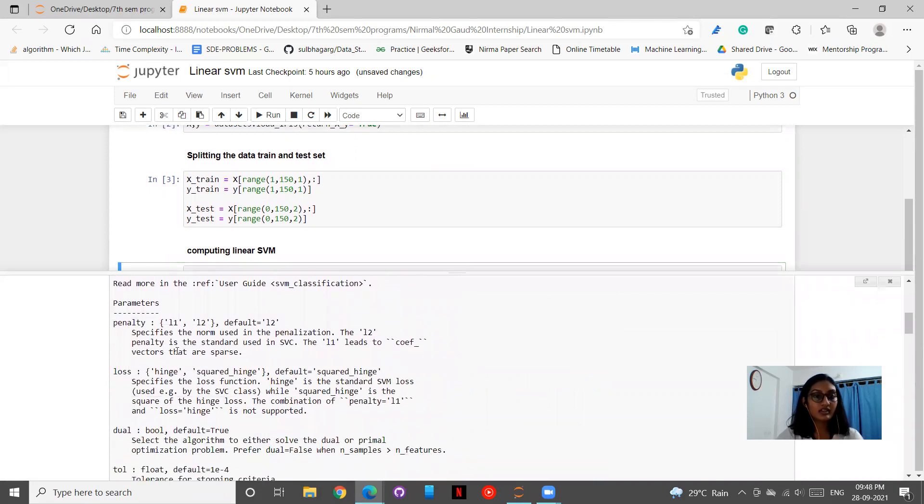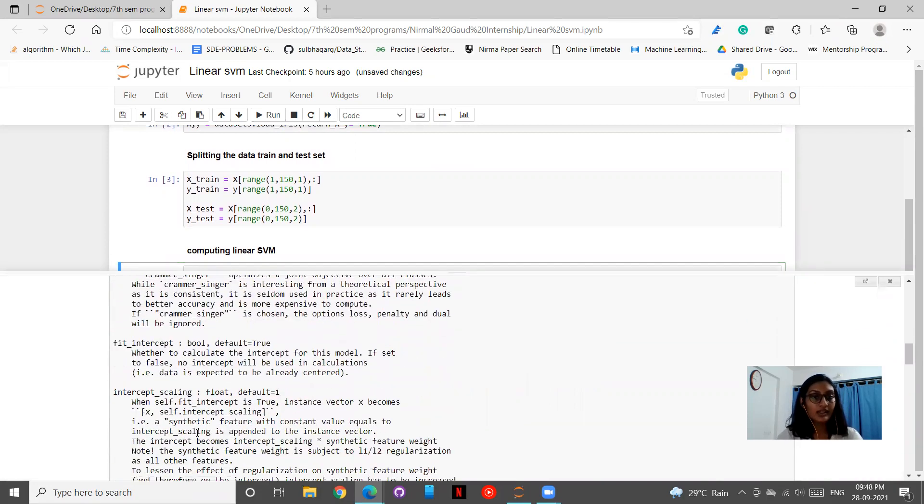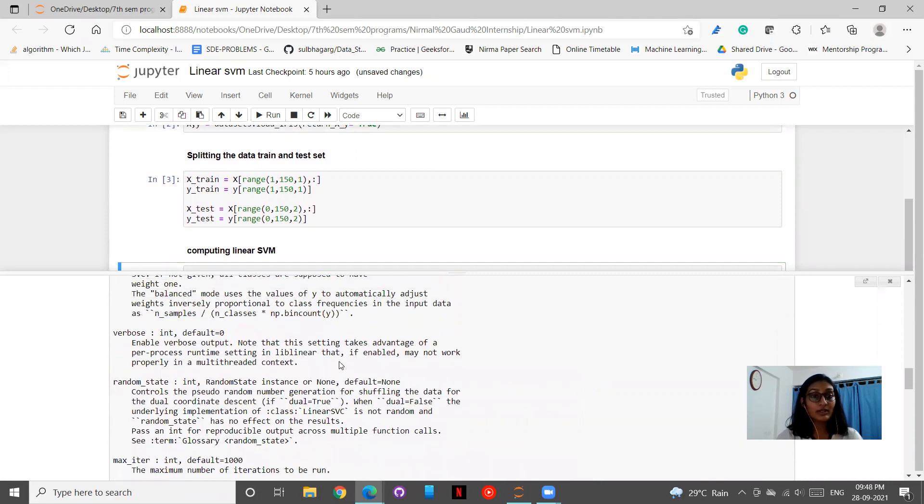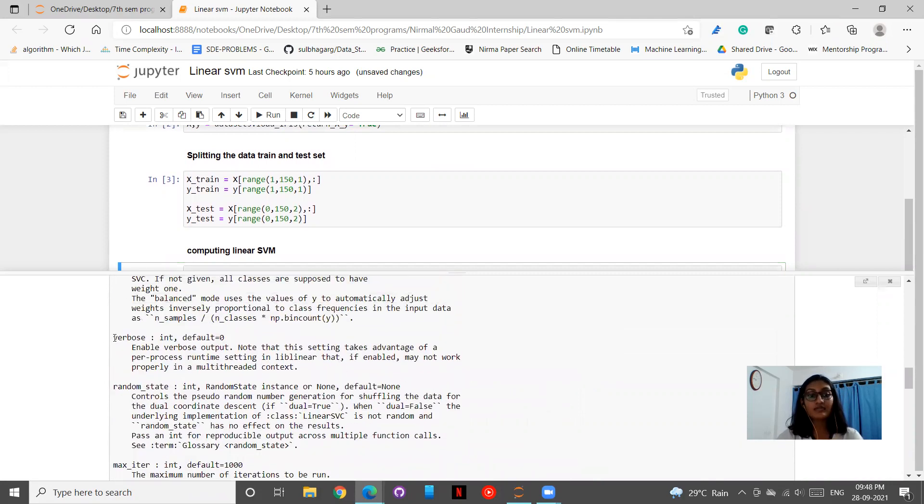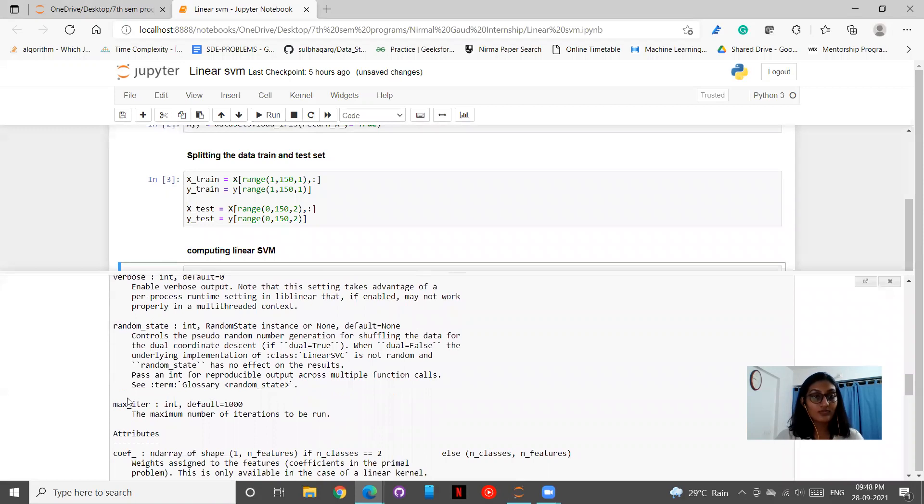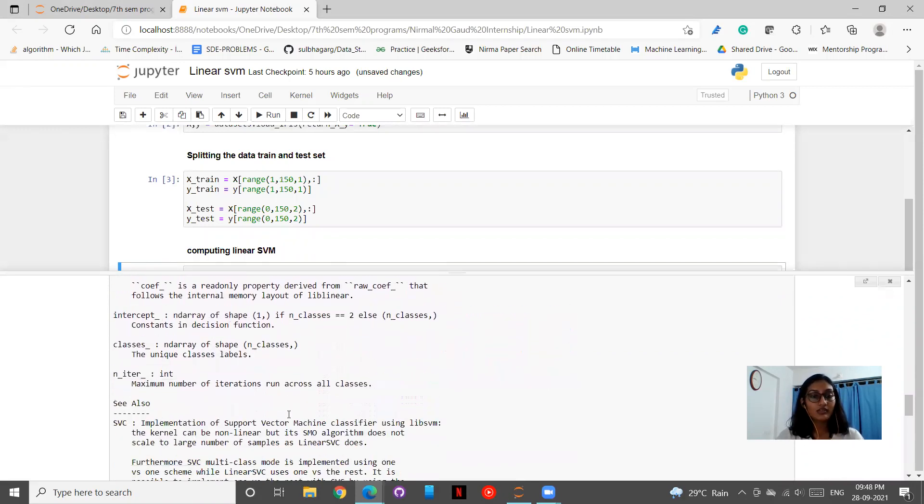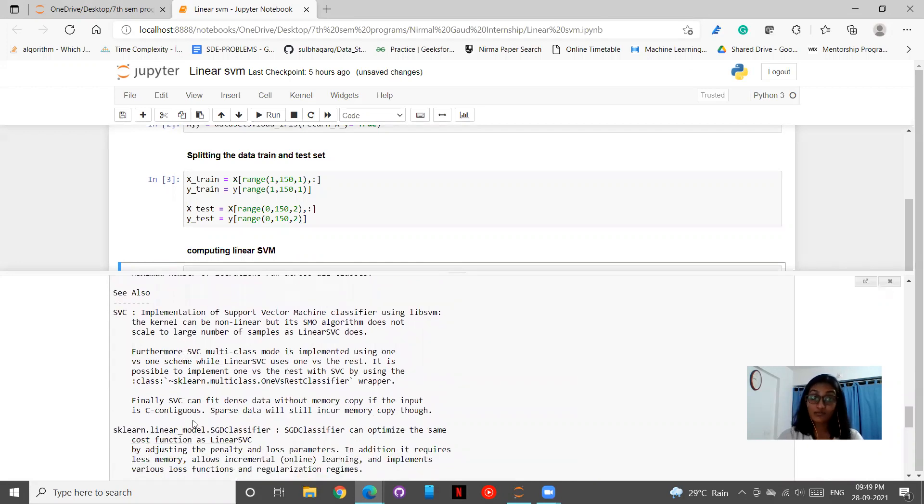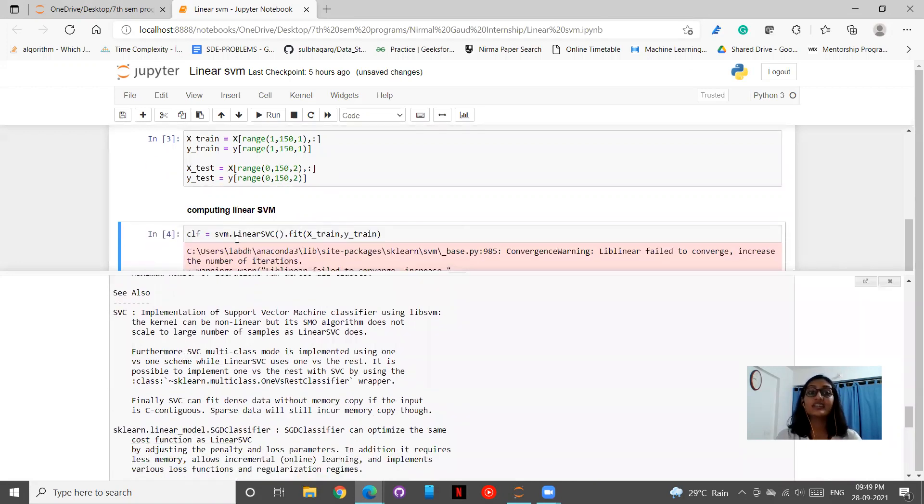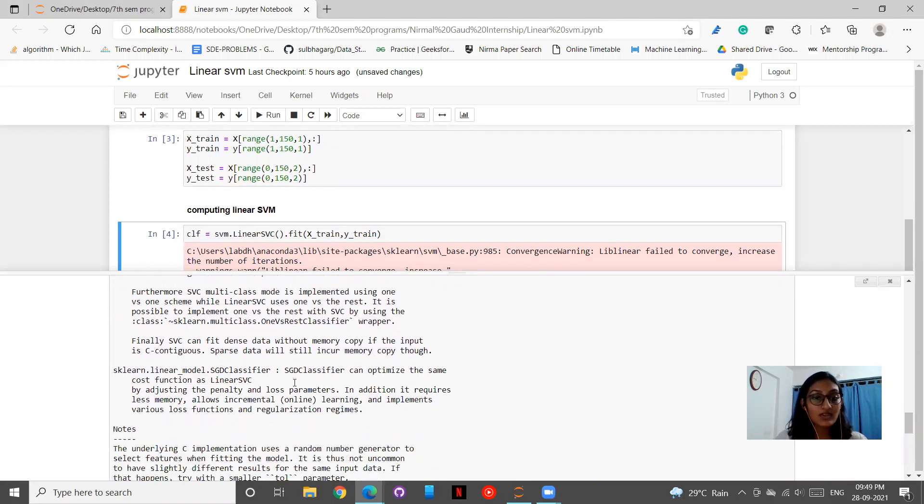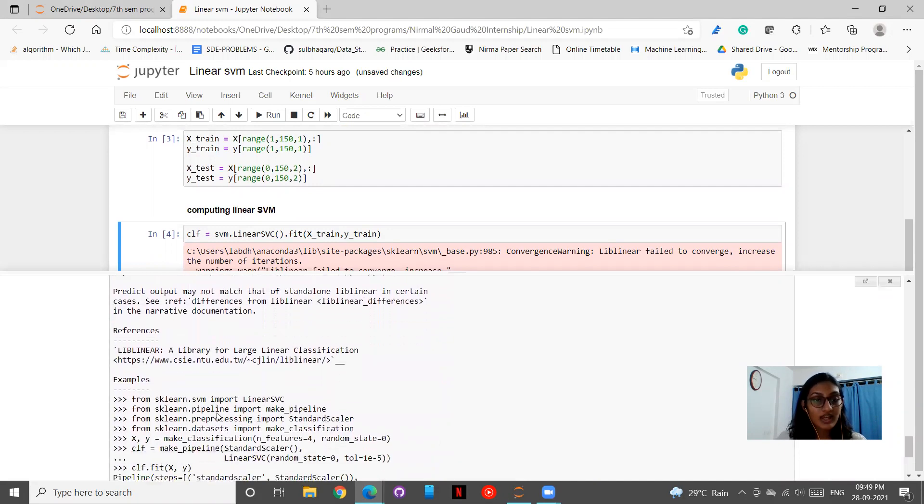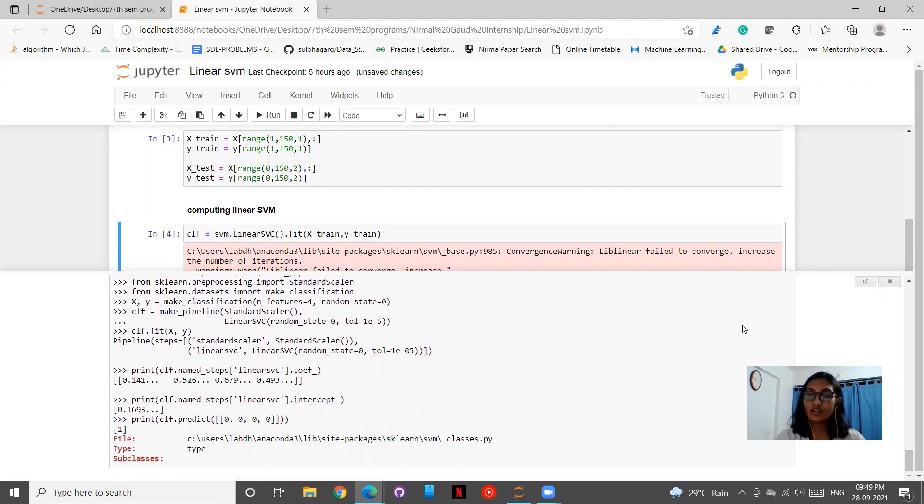The different parameters are stated over here and the example verbose. Verbose is the thing that we discussed last time. It shows the different steps while computing and thereafter we have the random state, the max iteration and thereafter we have the different attributes. Thereafter we have SVC. Here we have called linear SVC. We can even just call SVC. Then we have this classifier and this is one of the examples that they have given us.